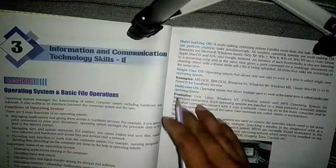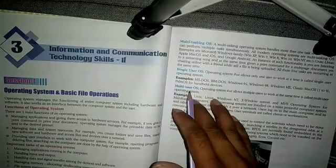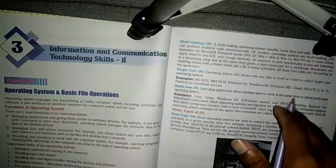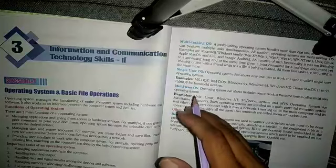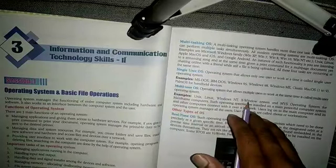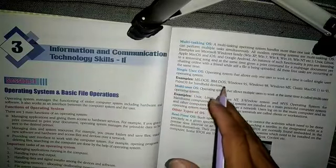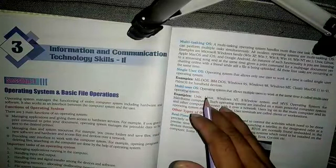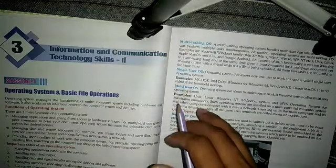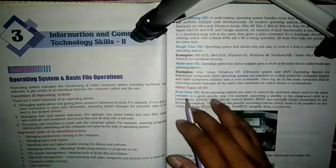After that, the next type of operating system is the multi-user operating system. The definition is: an operating system that allows multiple users to work at the same time. Examples include Unix, Linux, Windows NT, and Windows Server. In this type of operating system, multiple users can work at a single time.